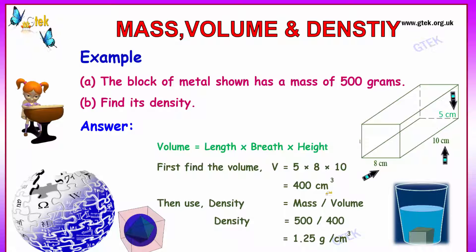Density equals mass divided by volume, so mass is 500 grams and the volume is 400 centimeter cube. 500 divided by 400 is 1.25 grams per centimeter cube.